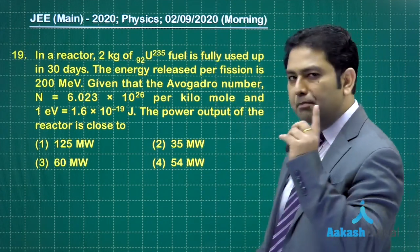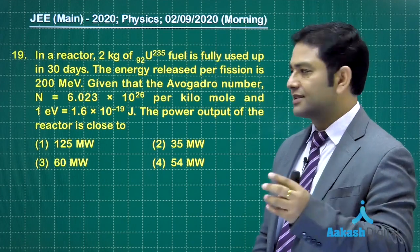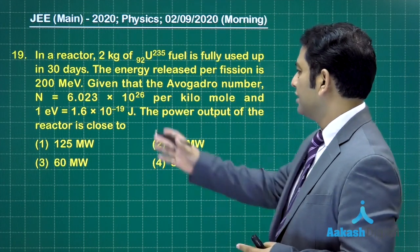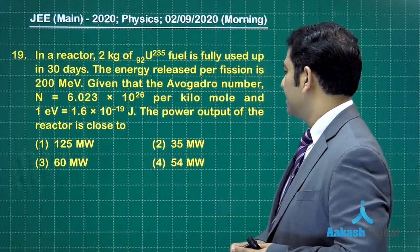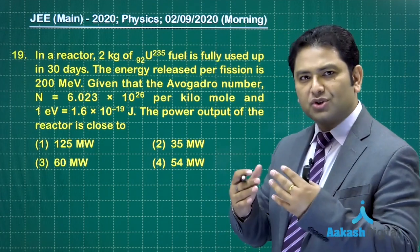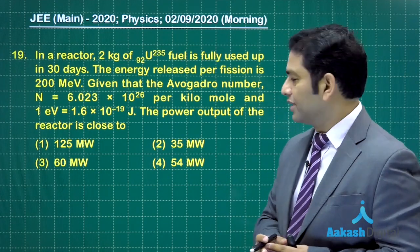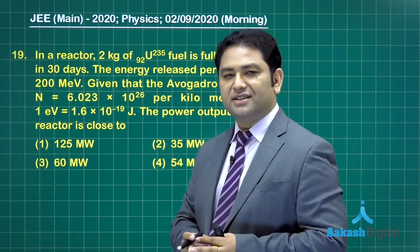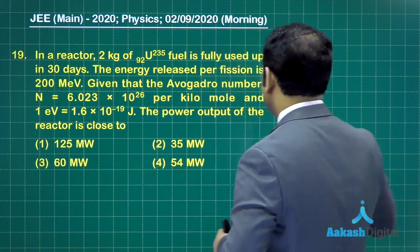The energy released per fission is 200 mega electron volts. The Avogadro's number has been given, 1 eV has been given. We need to calculate the power output of this reactor. The options are widely spaced, so you can easily find the answer with some approximation.